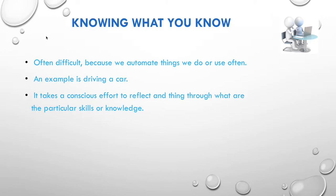Knowing what you know is often difficult because we automate things we use often. An example is driving a car — it takes a conscious effort to reflect on particular skills or knowledge. If you can remember back to when you first learnt to drive, it took a lot of cognitive energy: remembering your road position, what was coming on your right or left, checking the rear vision mirror, staying concentrated, getting ready to change gears, and being ready to stop at a pedestrian crossing. Many of those skills had not yet been automated. Once something is automated, it's often difficult to un-automate it so we can reuse it somewhere else.